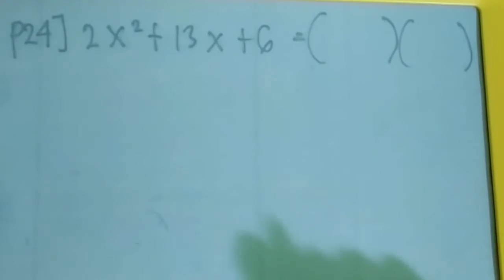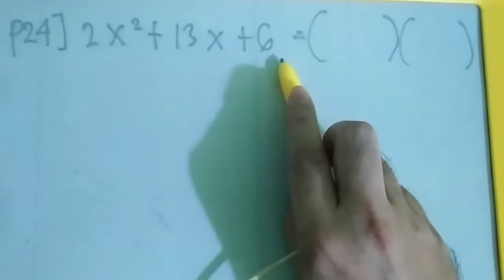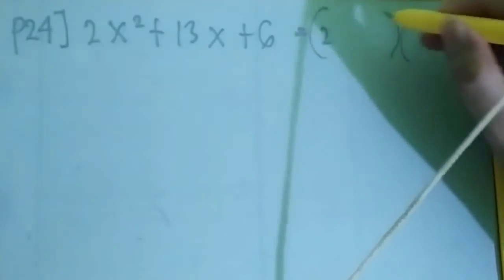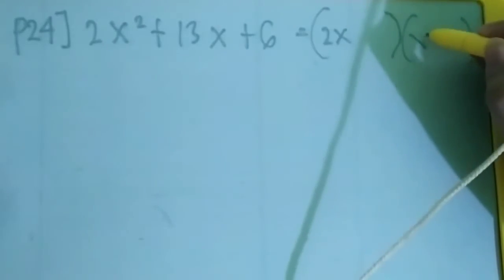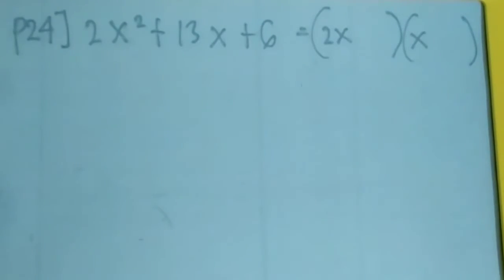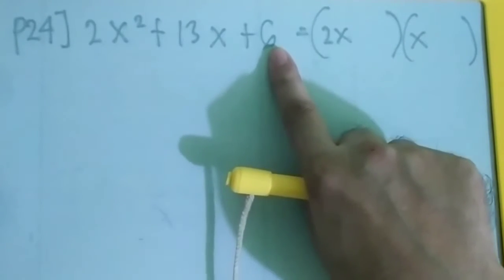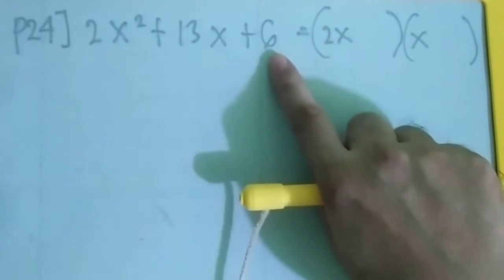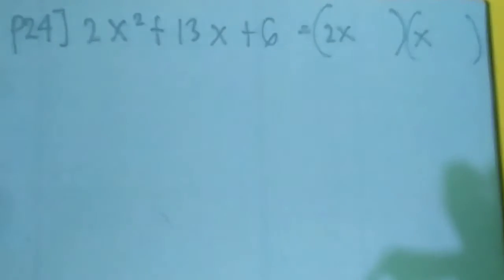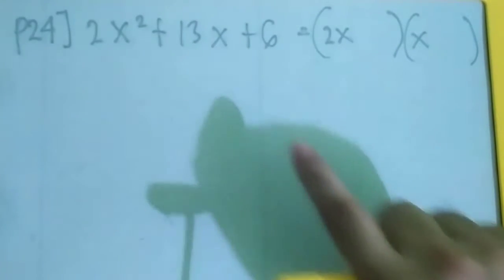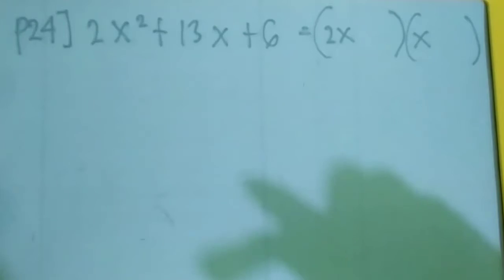Problem 24: 2x squared plus 13x plus 6. We have 2 and 1 for x squared, and 6 as the constant. So what are the factors of 6? We have 2 and 3, or 6 and 1. Since we need 13, maybe we are going to use the factor pair 6 and 1.